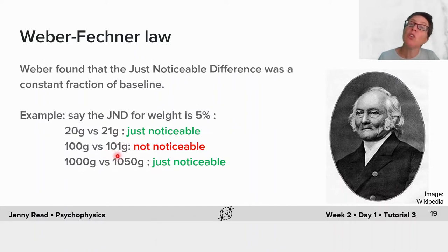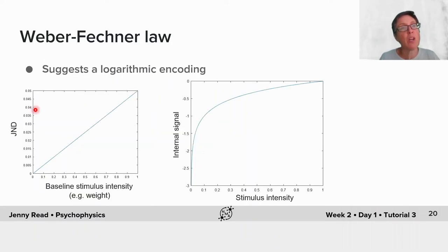You will not notice a 1 gram increment from 100 to 101 grams. And if you start off holding a kilogram, you might need 50 grams before that's noticeable. If we plot the JND as a function of the baseline stimulus intensity, we get a straight line. It's proportional one to the other.